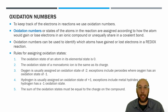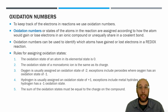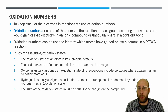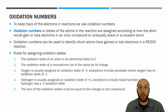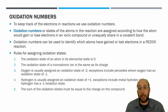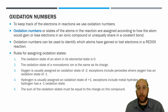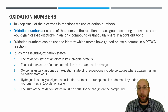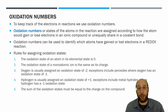There are a few rules for assigning oxidation states. The first rule: the oxidation state of an atom in its elemental state is zero — so Cl₂, H₂, O₂ are all sharing electrons equally and their oxidation states are zero. The oxidation state of a monoatomic ion is the same as its charge, so magnesium 2+ has an oxidation state of +2.